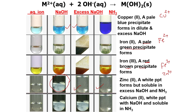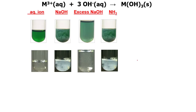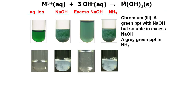Calcium 2+ (Ca2+) forms a white precipitate with NaOH — whether dilute or excess. It is soluble only in the case of ammonia. So calcium always gives a white precipitate with NaOH (dilute or excess), but is soluble with NH3.